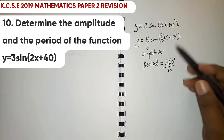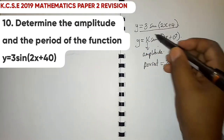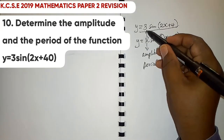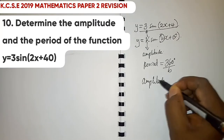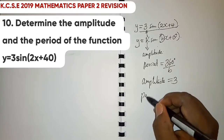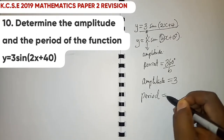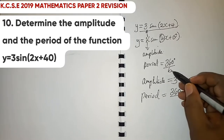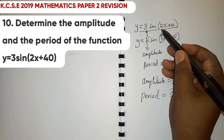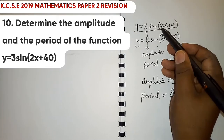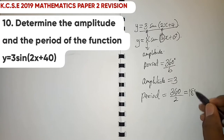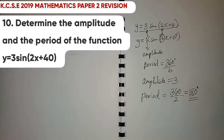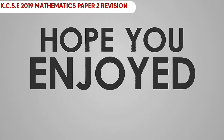For y = 3sin(2x + 40): the amplitude equals the value of k, which is 3. The period equals 360 divided by b, where b is the coefficient of x. Here b = 2, so the period = 360/2 = 180 degrees. That is how you find the amplitude and period of any trigonometric equation.